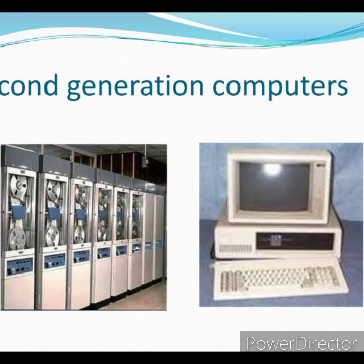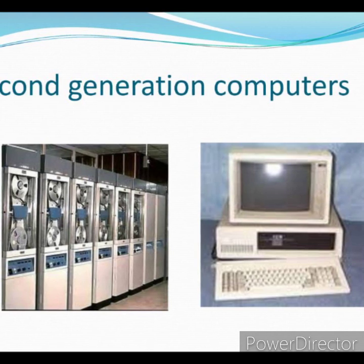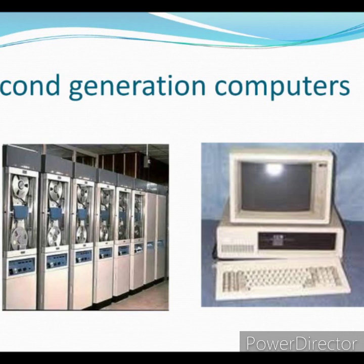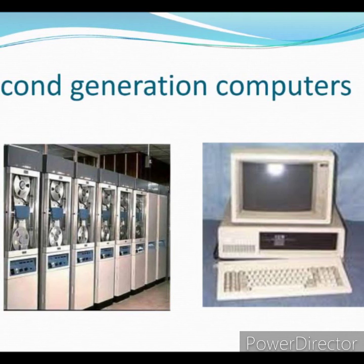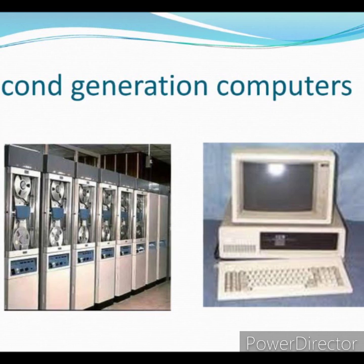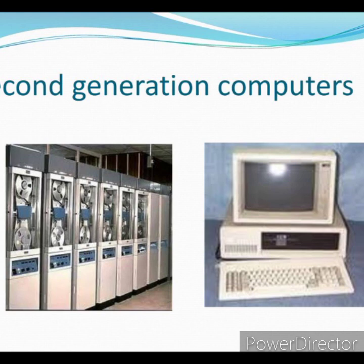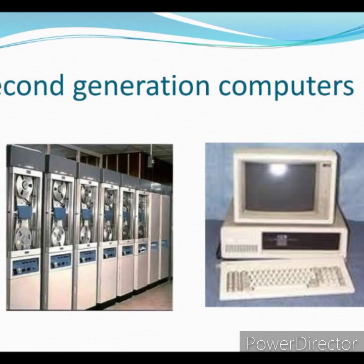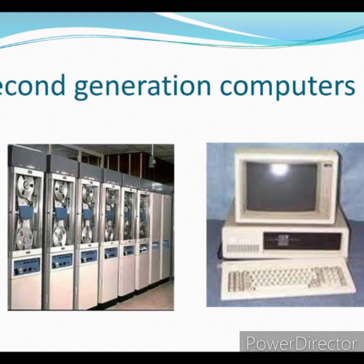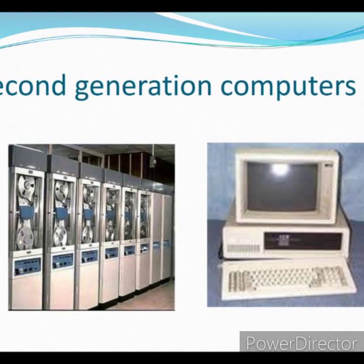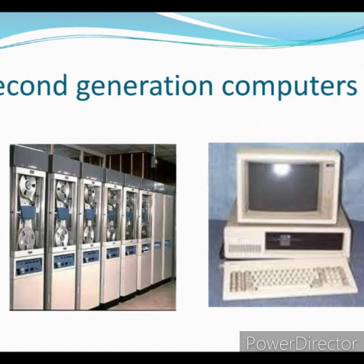Second generation computers. Duration: 1957 to 1963. The second generation computers used transistors to replace vacuum tubes. They were based on the use of magnetic tapes. They were smaller in size, generated less heat, and required less electricity compared to first generation computers.